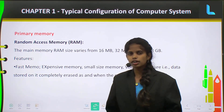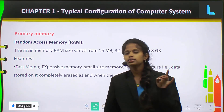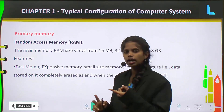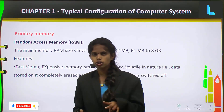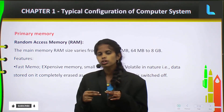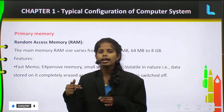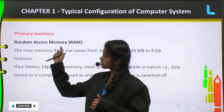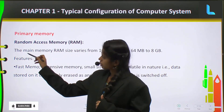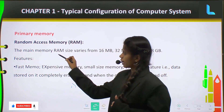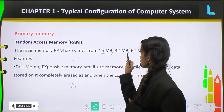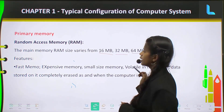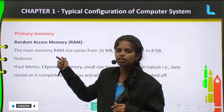In primary memory you have two types mainly: the first one is RAM — Random Access Memory — and the next type is ROM — Read Only Memory. These two you should explain along with their types. The size of RAM varies from 16MB, 32MB, 64MB up to 8GB.